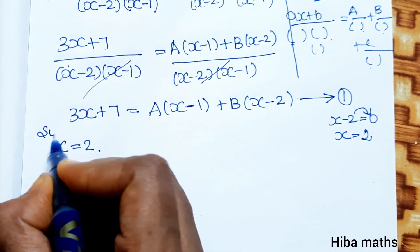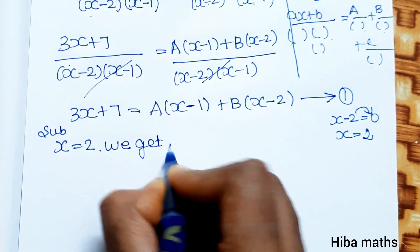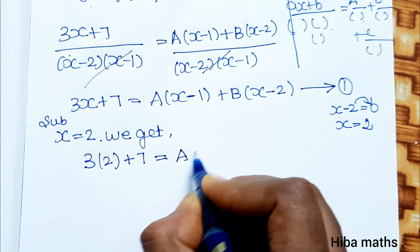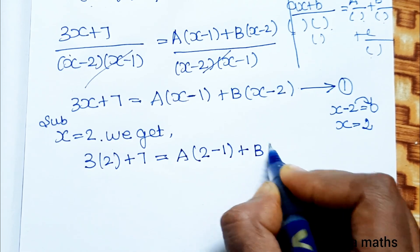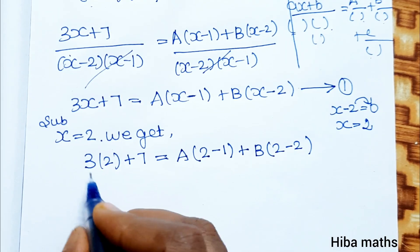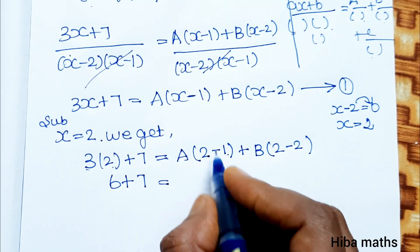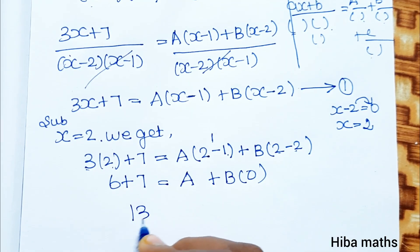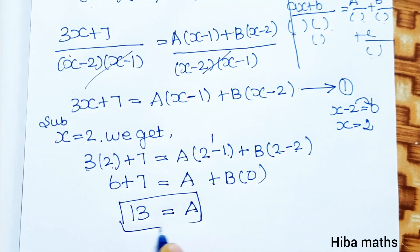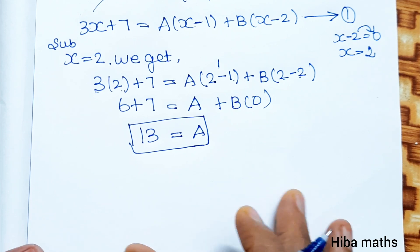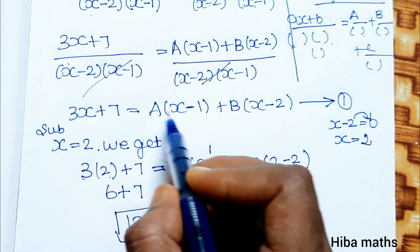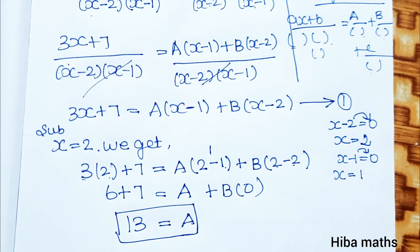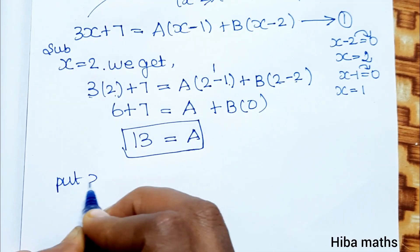Numerator: 3x plus 7 equals A(x minus 1) plus B(x minus 2). First condition: substitute x equals 2. Then 3 times 2 plus 7 equals A(2 minus 1) plus B(2 minus 2). That is 6 plus 7 equals A times 1 plus B times 0. So 13 equals A, meaning A equals 13.